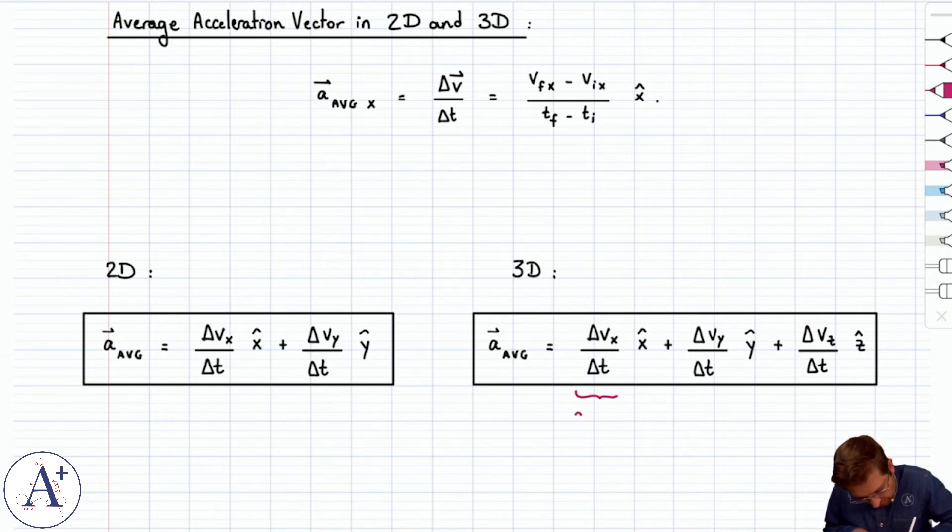And same comment as before, this quantity we often just call a_average_x, that'd be the x component of the average acceleration. This would be the y component, this would be a_average_y, and then right here, a_average_z.